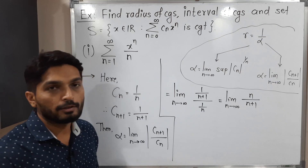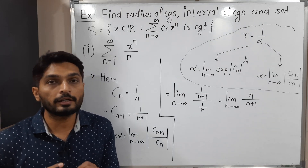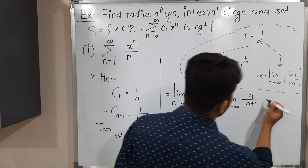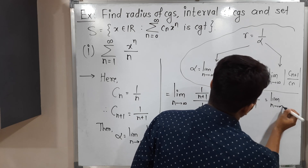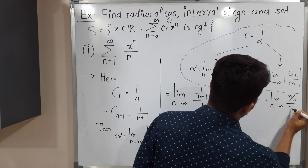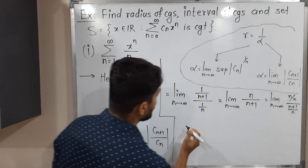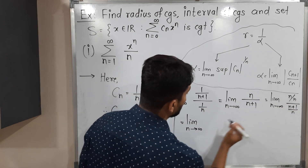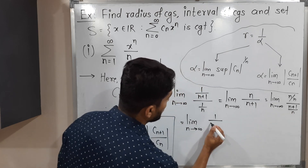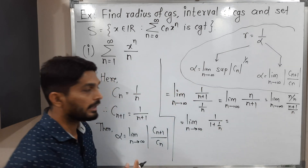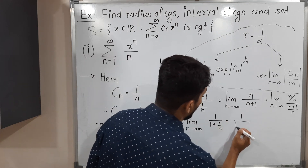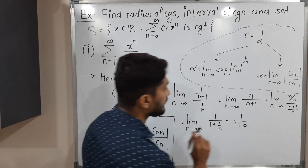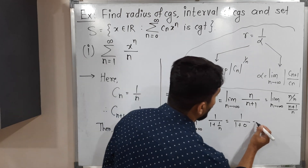To find the value of this limit, I divide numerator and denominator by n, since the highest power of n is 1. Dividing numerator by n and denominator by n, this becomes the limit as n tends to infinity of 1 over (1 + 1/n). Applying the limit: the numerator is constant 1, and 1/n as n tends to infinity equals 0 since 1 upon infinity is 0. So the final value of alpha is 1.